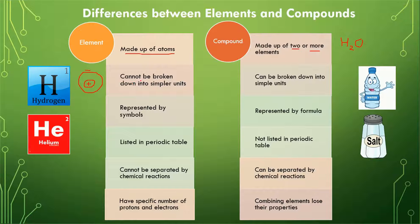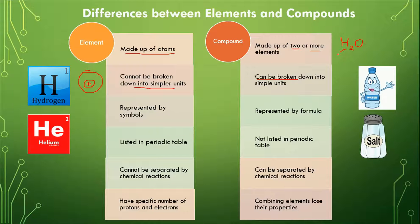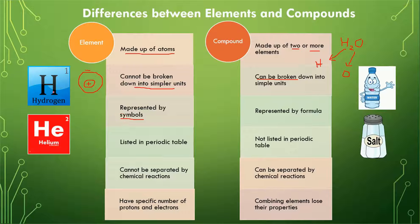Elements cannot be broken down into simpler units — breaking them down further is difficult. However, compounds can be broken down into simpler units. For example, if we break down water, we get hydrogen and oxygen.